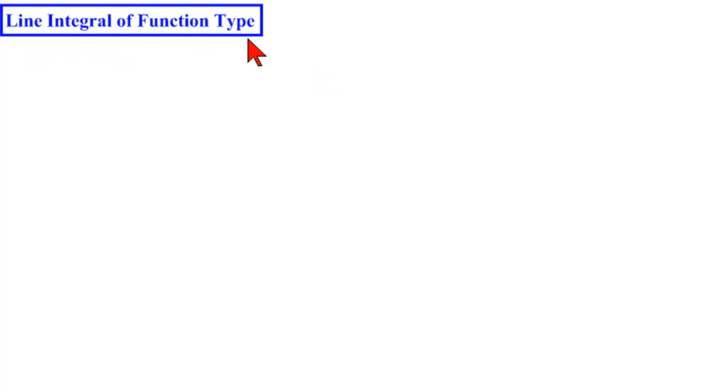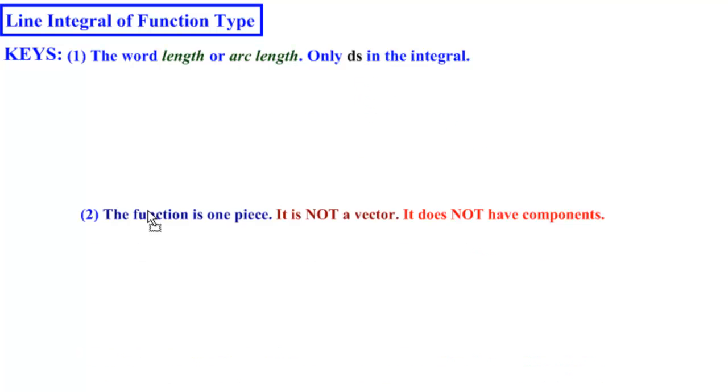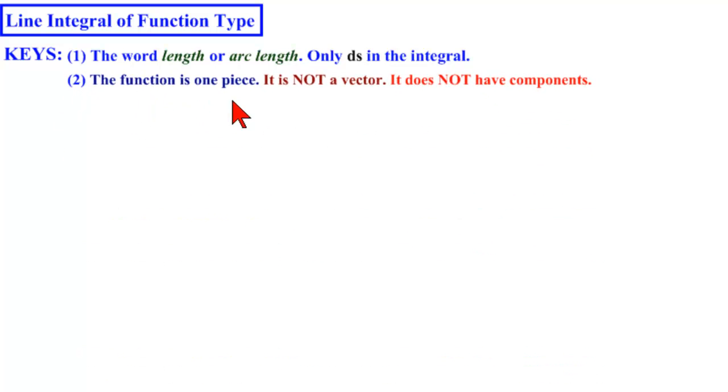How do we tell if a line integral is a function type? The first thing we look for is the word length, or arc length, or only ds in the integral, not dx, dy, dz. And the second thing is that the function is in one piece. It's not a vector. It's scalar valued. It cannot have components.